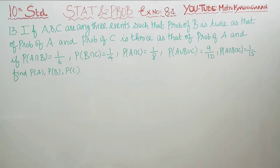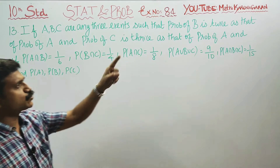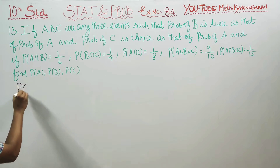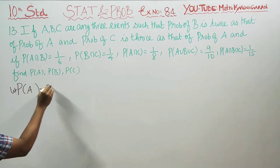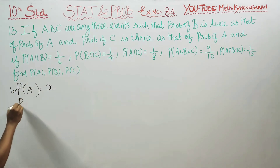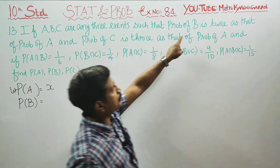Dear 10th standard students, in Exercise 8.4, sum number 13: if A, B, C are any 3 events such that probability of B is twice that of probability of A, and probability of C is twice that of probability of A.